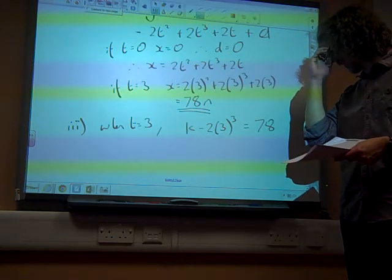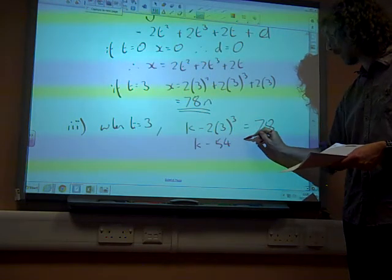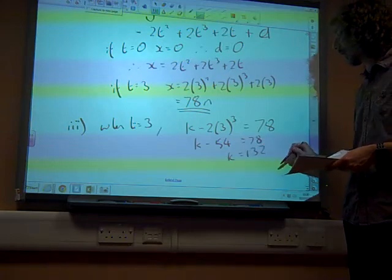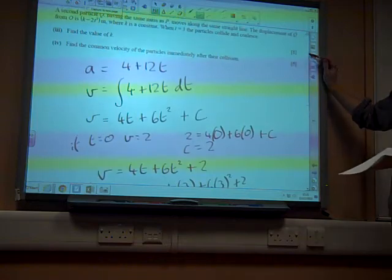So when t equals 3, we've got that k minus 2 times 3 cubed must be equal to 78, because the distance of q must be the same as the distance of p because they collide at that point. So that is k minus 54 is 78, so k is 132. There we have the value of k. That was quite nice.